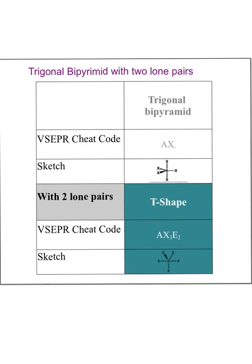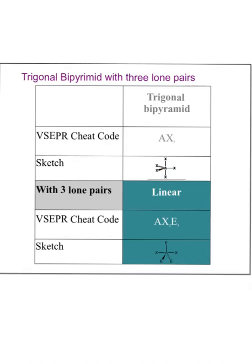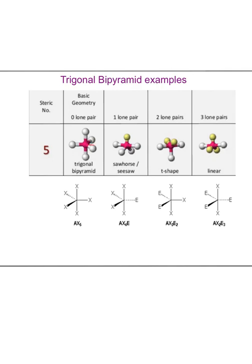If I replace two equatorial positions with lone pairs, I get AX3E2 — this is called T-shaped. Ignore the lone pairs and you can see the letter T. The last variation is AX2E3 — called linear. I've replaced all three equatorial positions with lone pairs, and the remaining X-A-X arrangement is a straight line. So we've now seen both 'linear' and 'bent' appear twice as geometry names.